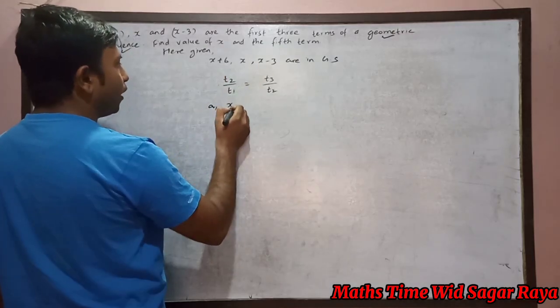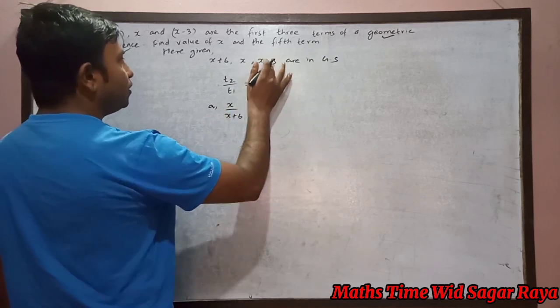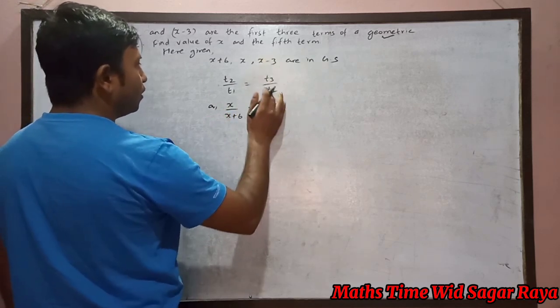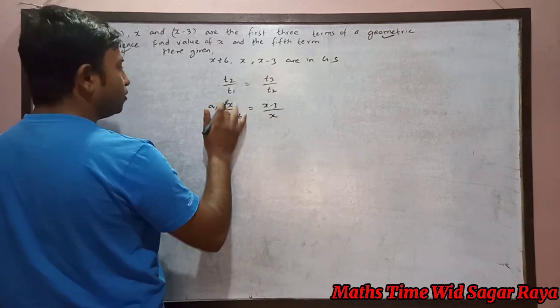What is the value of t2? x. What is the value of t1? x plus 6. What is the value of t3? x minus 3. And what is the value of t2? x. Now let's cross multiply.